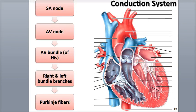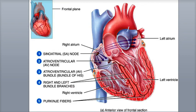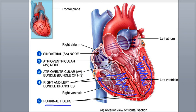The final step of the conduction system is the Purkinje fibers. These are large-diameter fibers that rapidly send the action potential up from the apex toward the rest of the ventricular wall. The ventricles, now filled with blood, are allowed to contract, pumping blood up through the semilunar valves. Think of squeezing toothpaste from the bottom of the tube — that's equivalent to what the ventricles are doing, pumping blood up and out through the semilunar valves into the arteries.